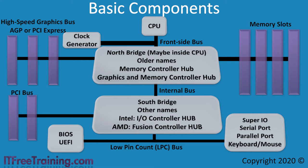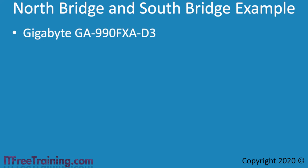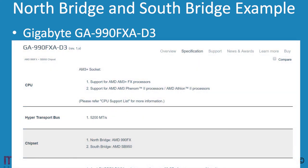To get a better understanding of how these components work on the motherboard, I will have a look at a few different motherboards. The first motherboard is a Gigabyte motherboard that contains a North Bridge and a South Bridge chip. Looking at the specifications, the North Bridge is listed as AMD 990FX and the South Bridge as AMD SB950. Different chipsets have different functions and support different hardware — some have additional features like supporting different levels of RAID. Motherboards with the same chipset tend to have the same features, so when looking for a motherboard, you may want to find one with a particular chipset to meet your needs.